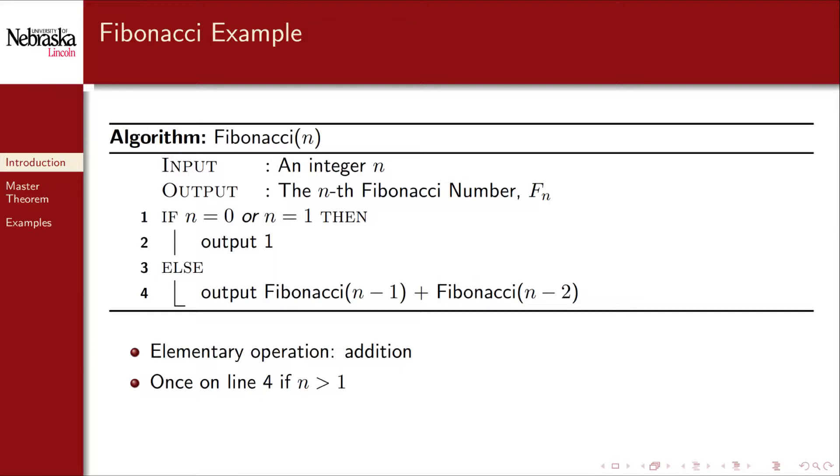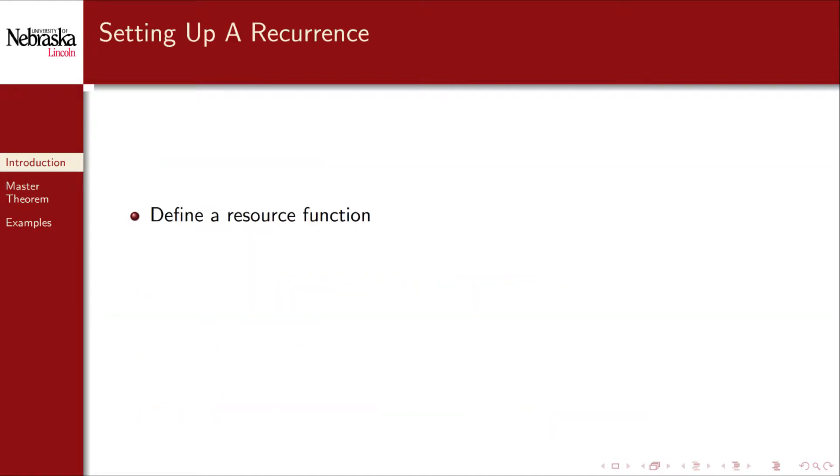In step four, we need to determine how many additions are performed by this algorithm. It is easy to see that we perform one addition on line four if n is strictly greater than one. However, we make two recursive calls to this function, which also perform a number of additions. To capture this idea, we need to define a resource function.